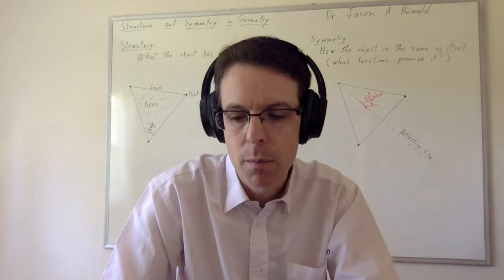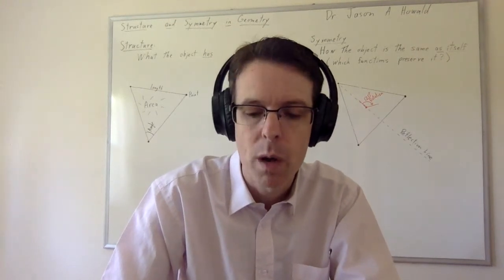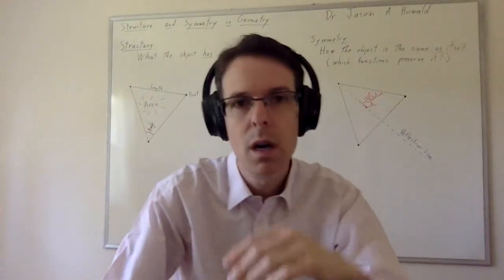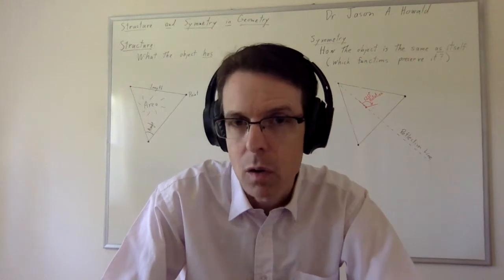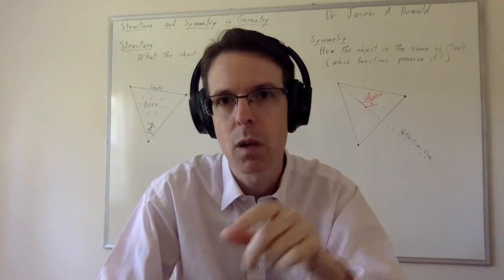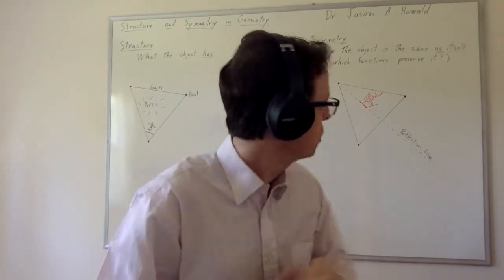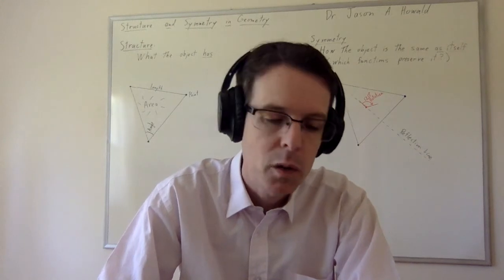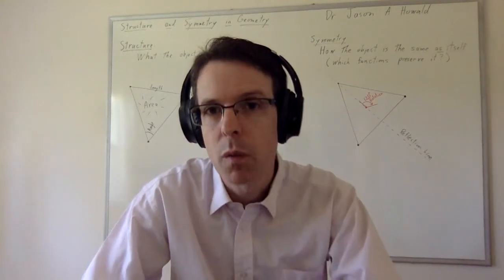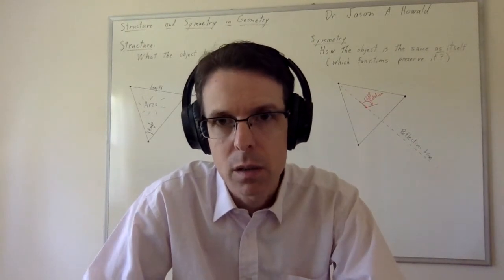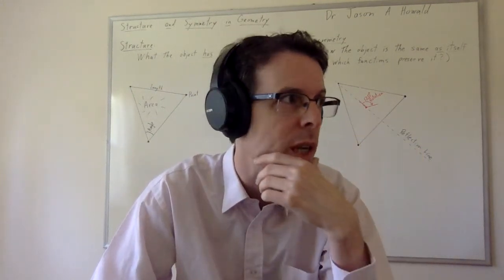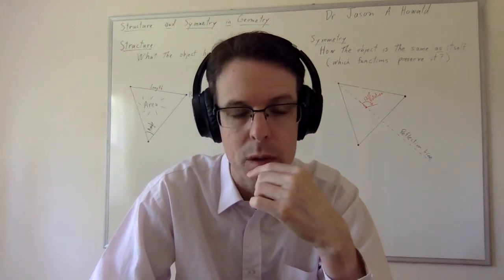There's an example behind me of a triangle — I've tried to draw an equilateral triangle on the whiteboard. It has certain structural characteristics, like length, area, and angle. And it has certain symmetry characteristics. An equilateral triangle has a 120-degree rotational symmetry, noted in red there. And it also has a reflection line shown on the board behind me. That's not the only reflection line it has — it has two other reflection lines. So the square also has reflection lines, and it can be interesting to count the number of symmetries that these shapes have.